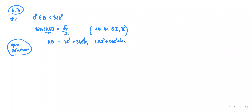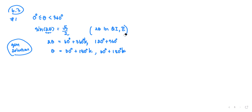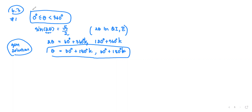That means when we look for angle θ, we divide everything by 2 to get θ = 30° + 180°k and also θ = 60° + 180°k. This is the general solution. Now we look for angles within the first revolution.